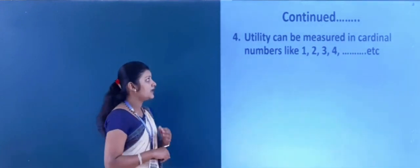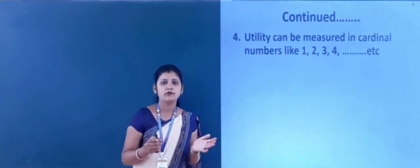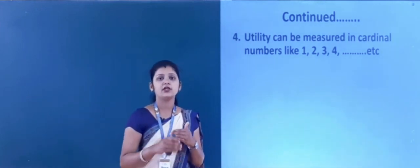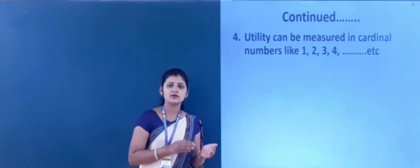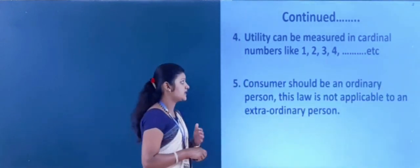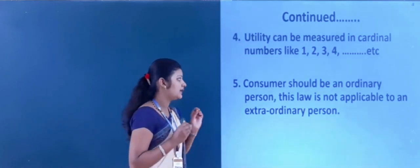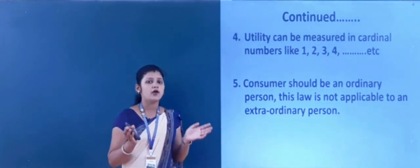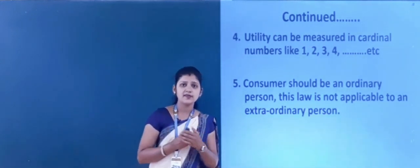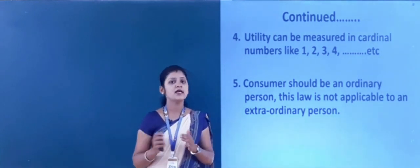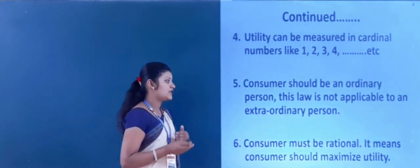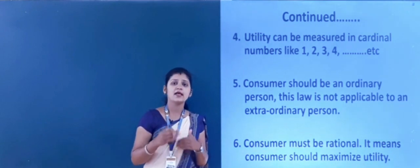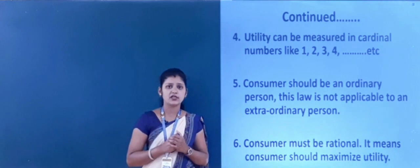The next assumption is: utility can be measured in cardinal numbers like 1, 2, 3, 4, etc. Because the law assumes utility can be measured in numbers — that is why it is also called the cardinal utility approach. The next assumption is: the consumer should be an ordinary person; this law is not applicable to an extraordinary person. The final assumption is: the consumer must be rational, meaning the consumer should maximize utility.